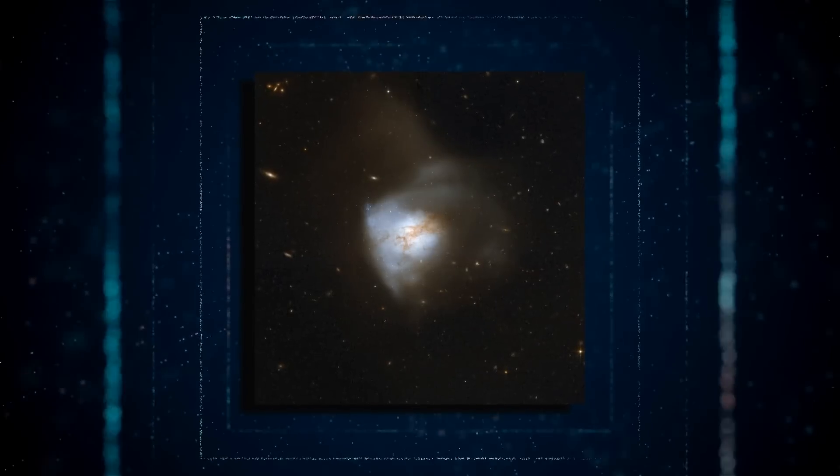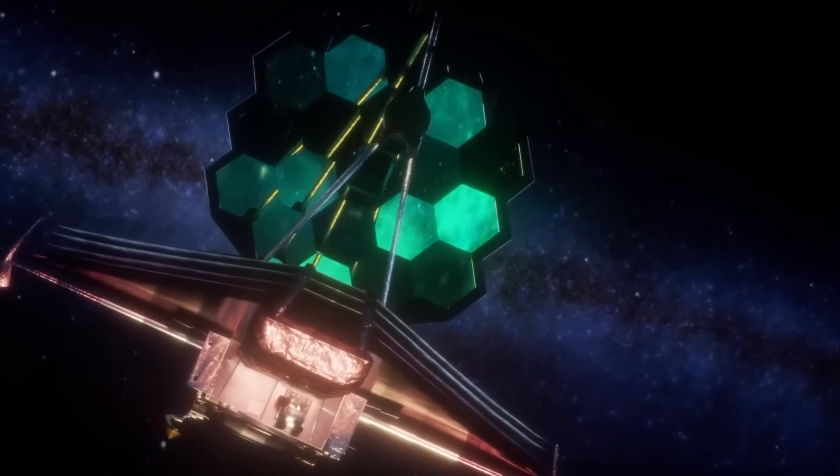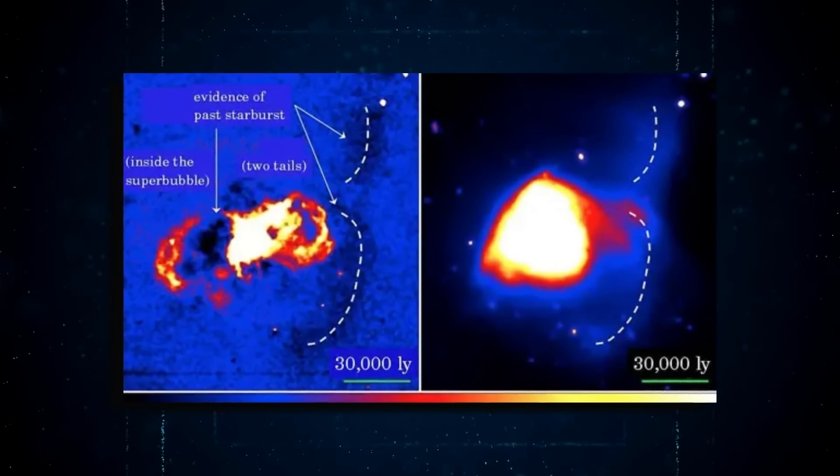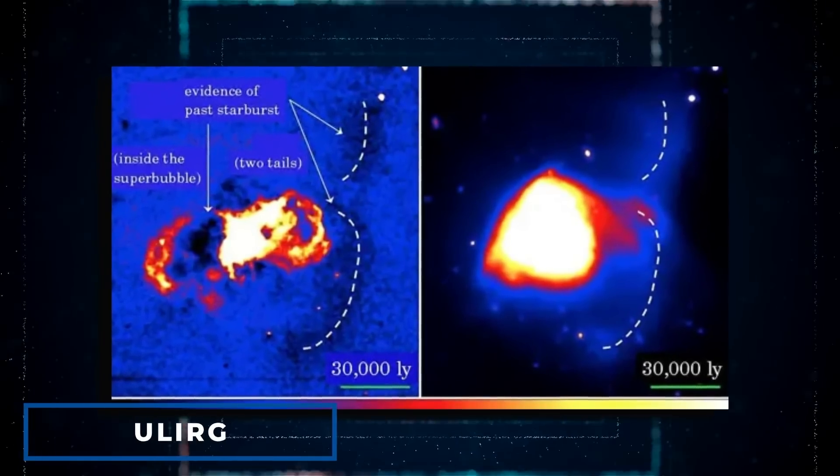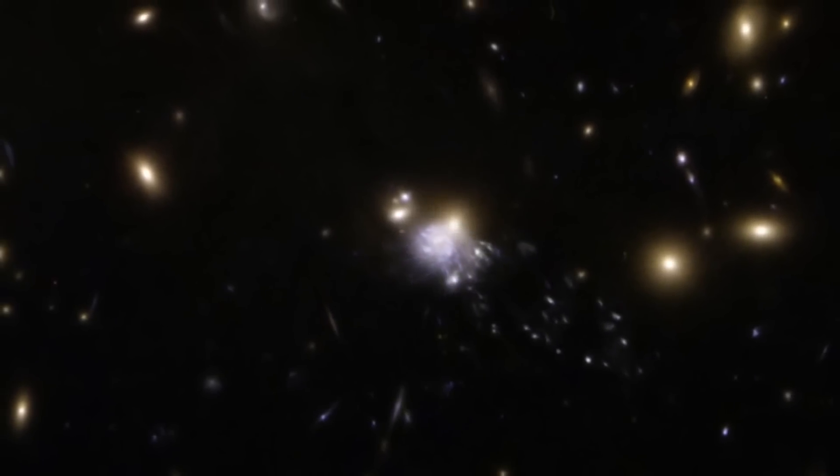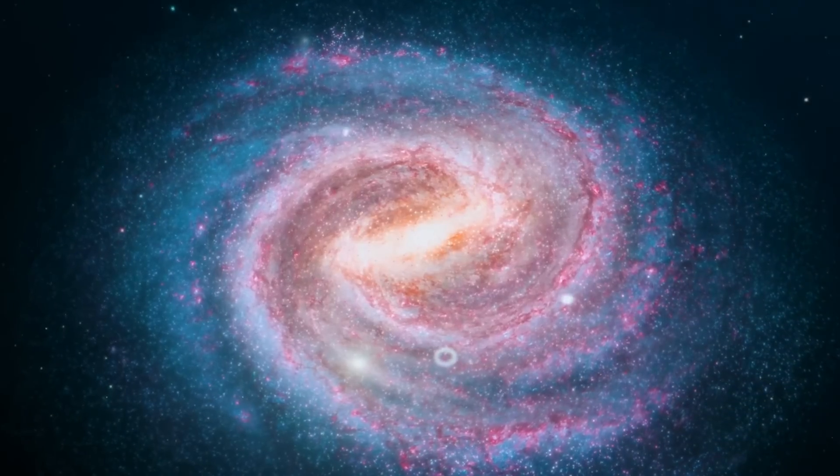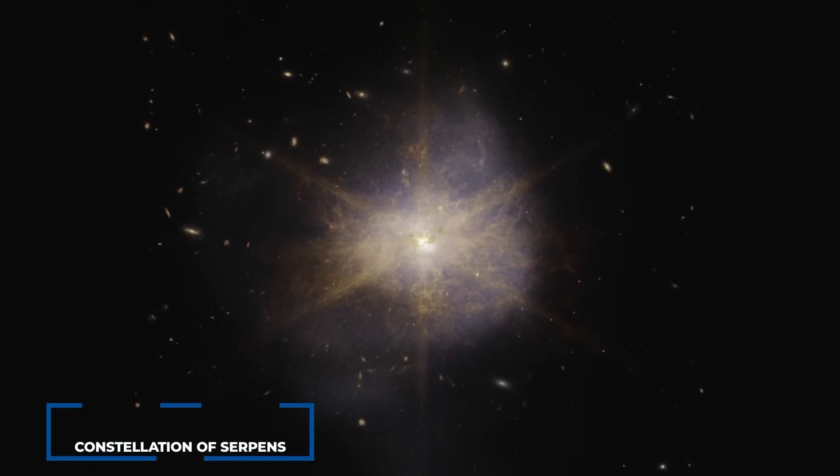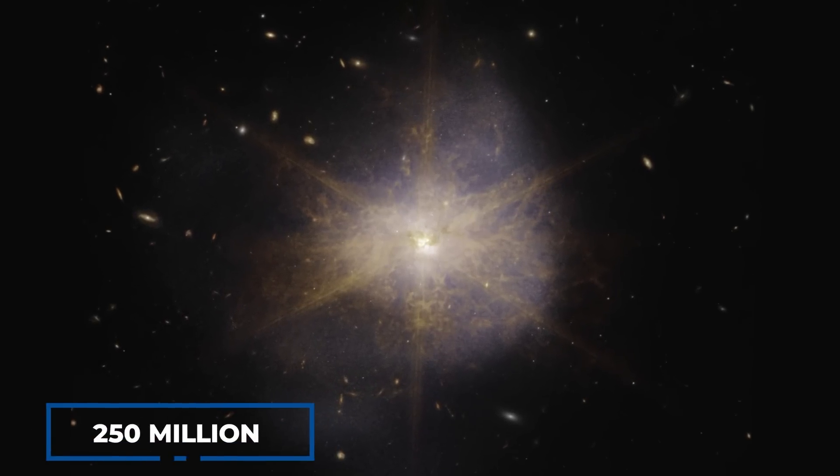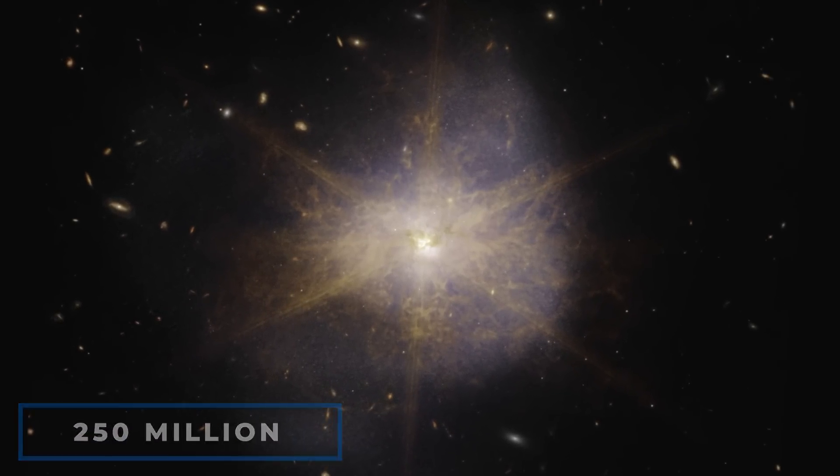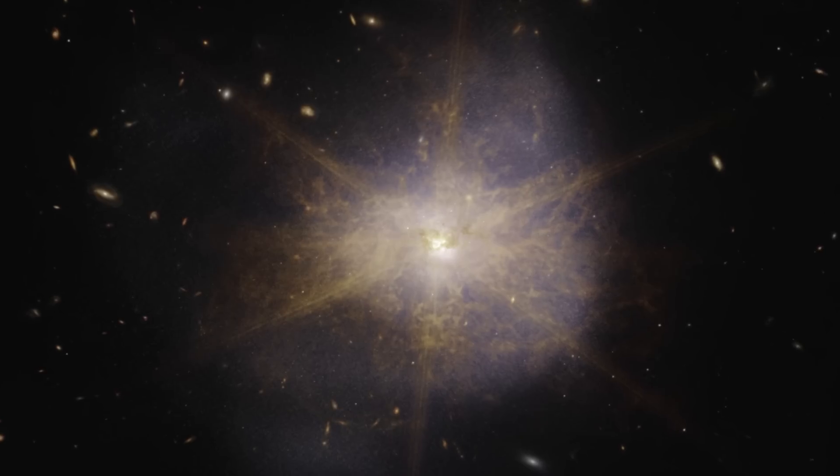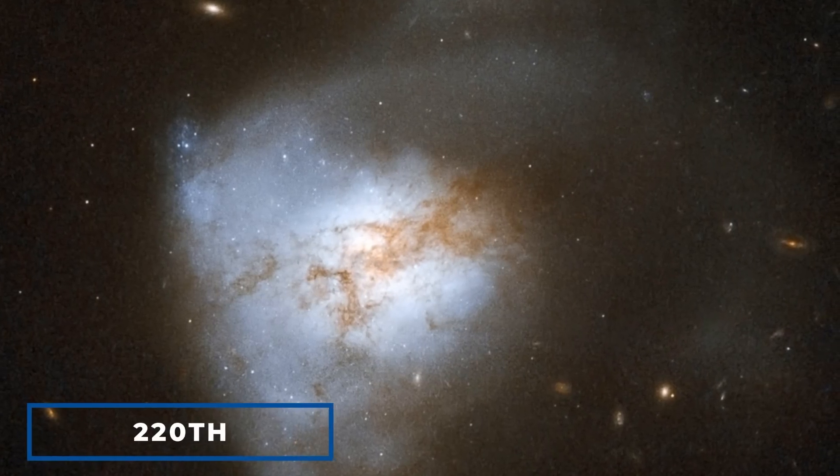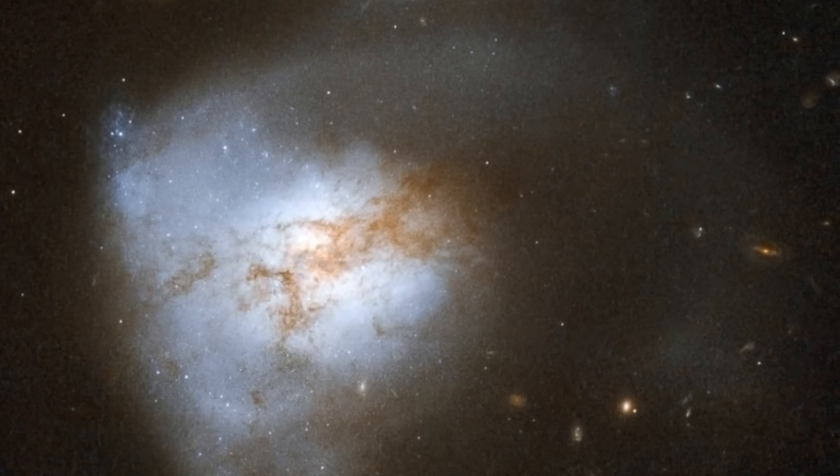ARP 220 is known to shine the brightest in infrared light, making it a perfect target for Webb's observations. It is classified as an ultraluminous infrared galaxy, ULIRG, which means it has a luminosity of more than a trillion suns, compared to our own Milky Way galaxy's much smaller luminosity of around 10 billion suns. Located in the constellation of Serpens, about 250 million light years away, ARP 220 is considered the brightest of the three galactic mergers that are closest to Earth, and it's the 220th object in Halton Arp's Atlas of Peculiar Galaxies.